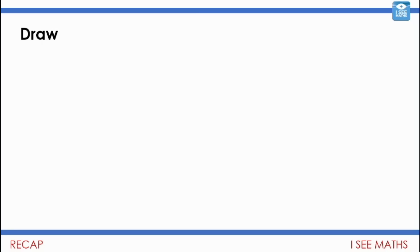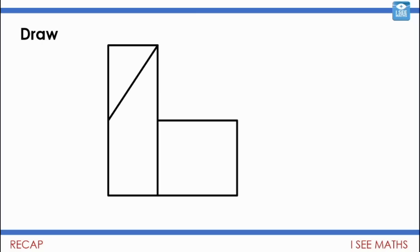Have a go at drawing that - pause the video if you need to. Then the last thing I want you to do is go to the top right-hand corner of that tall thin rectangle and draw a diagonal line that goes down to the left, joining up with the left-hand side of that rectangle about halfway down. So draw that diagonal line from the top right corner down to halfway along the left edge. Pause if you need to, then let's see how well we did - I wonder how similar they are!